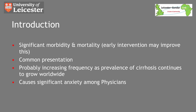Upper GI haemorrhage has significant morbidity and mortality associated with it and the mortality rates have not altered in the past 20 years. They remain around 10% for patients admitted to hospital with upper GI bleeding and 25% for those who suffer a bleed while in hospital for another reason. Although it may seem we've made little progress, the age of patients presenting has increased as they tend to be sicker and have more comorbidities, which may in part account for the lack of progress at decreasing death rates.